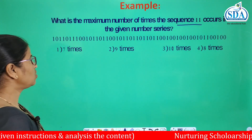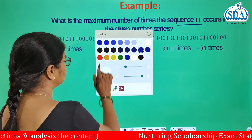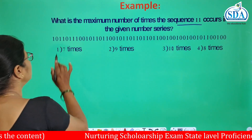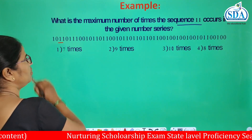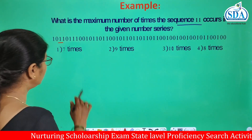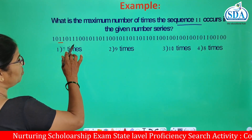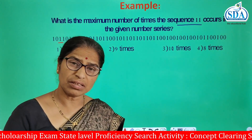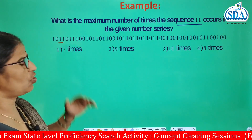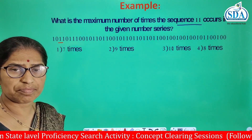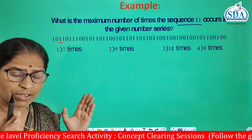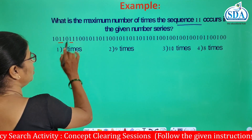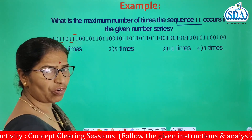Now see — here there is a one-one, here there is a one-one, and one. Some students may think we should not consider them, but we should consider it twice — this one-one and this one-one pattern both follow.